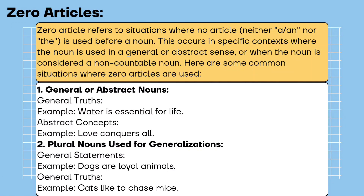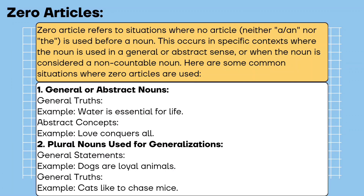Zero articles. Zero article refers to situations where no article — neither 'a/an' nor 'the' — is used before a noun. This occurs in specific contexts where the noun is used in a general or abstract sense, or when the noun is considered a non-countable noun. General or abstract nouns — general truths. Example: water is essential for life. Abstract concepts. Example: love conquers all.